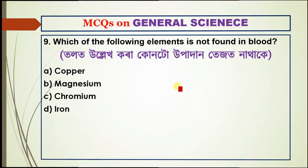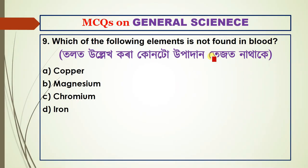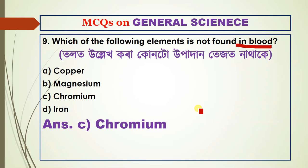Question number nine: which of the following elements is not found in blood? The options are copper, magnesium, chromium, and iron. The answer is chromium — it is not found in blood. The others — copper, magnesium, and iron — are found in blood.